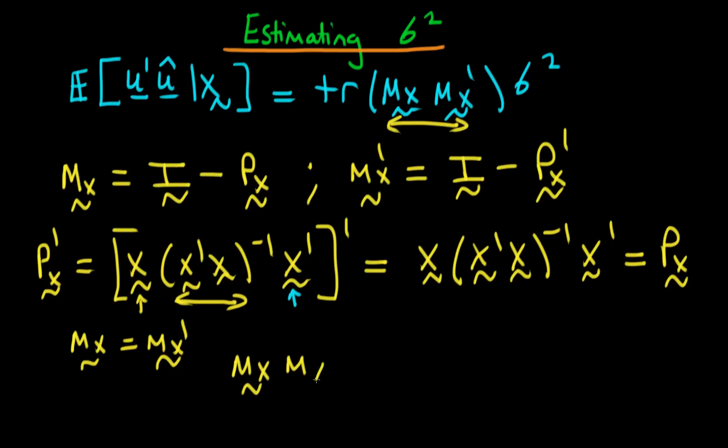So mx times mx is just equivalent to i minus px times i minus px which if you multiply this out we're going to have our first term is just going to be i times i which is just i.